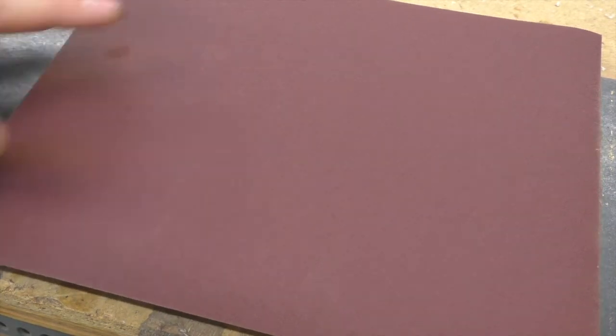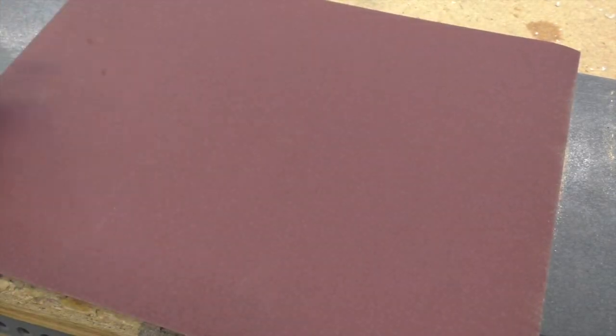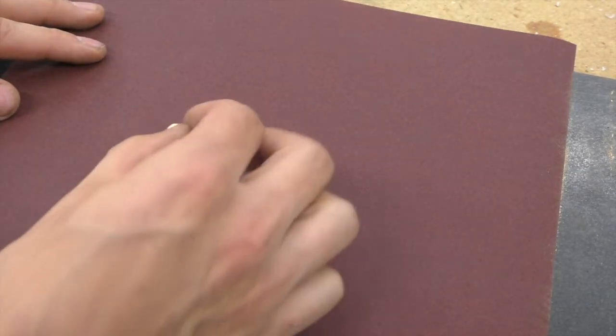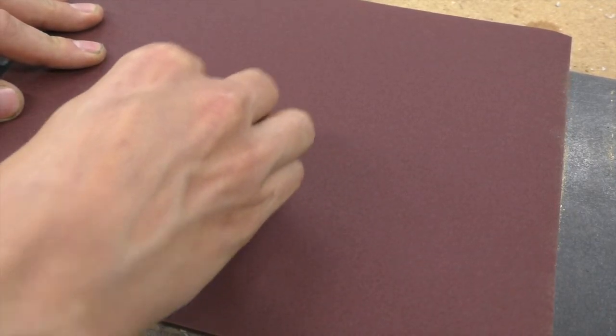So what I have here is a piece of 220 grit sandpaper on a piece of flat granite, and I'm just going to refine those radiuses on here until we get a nice smooth curve.